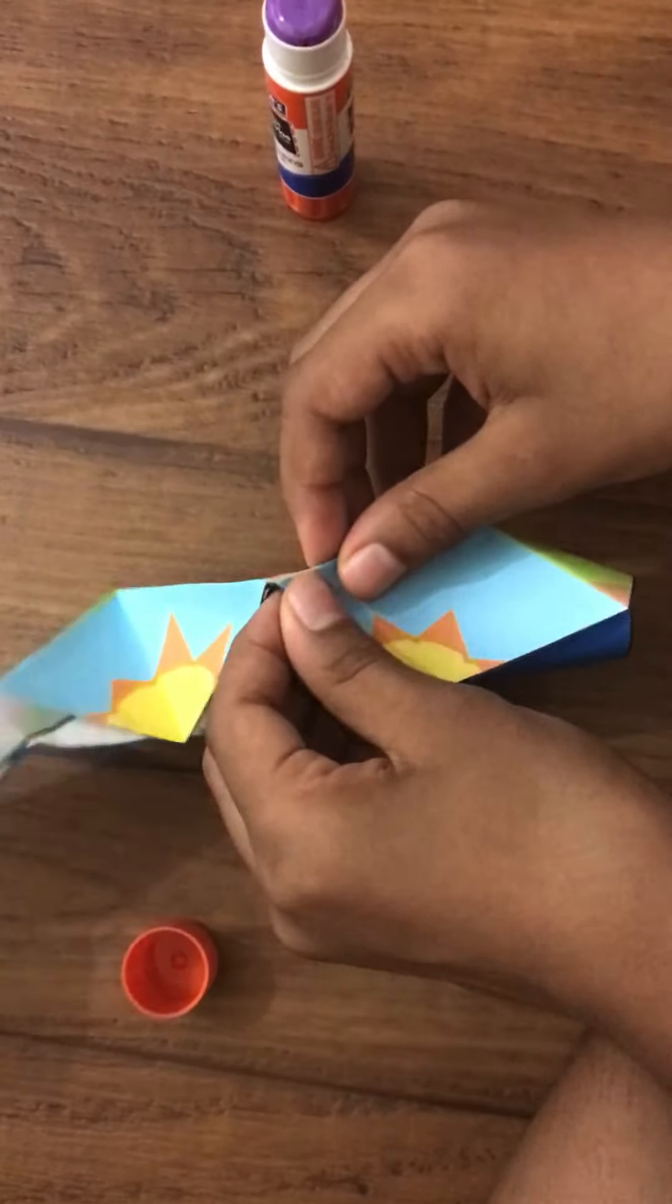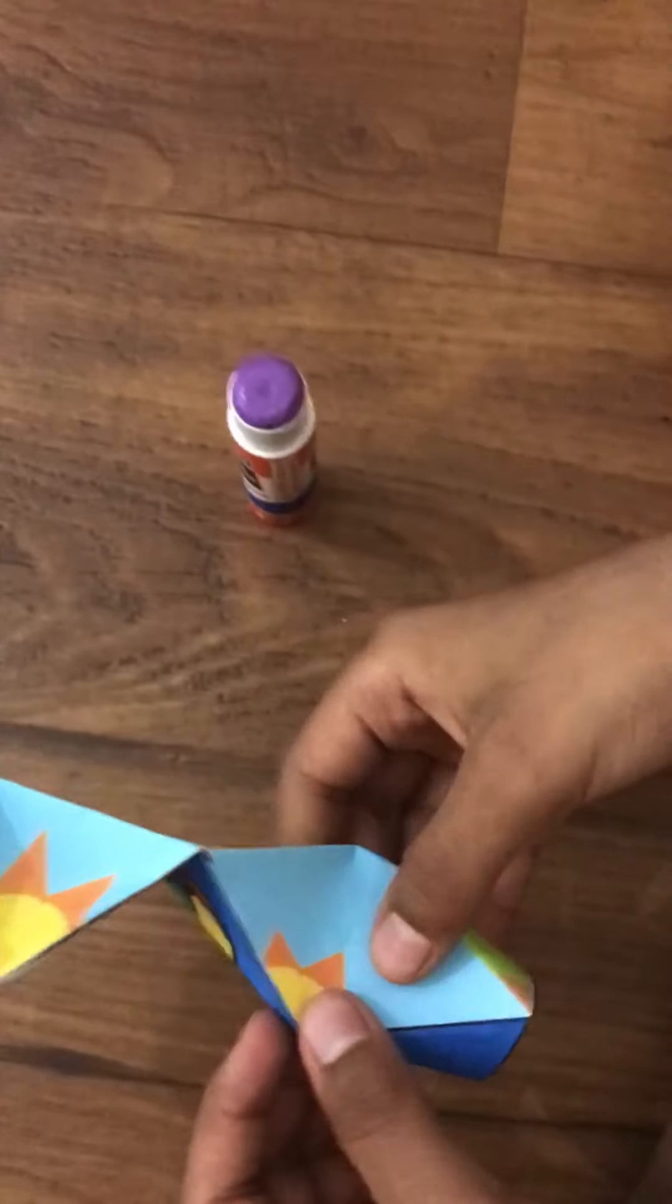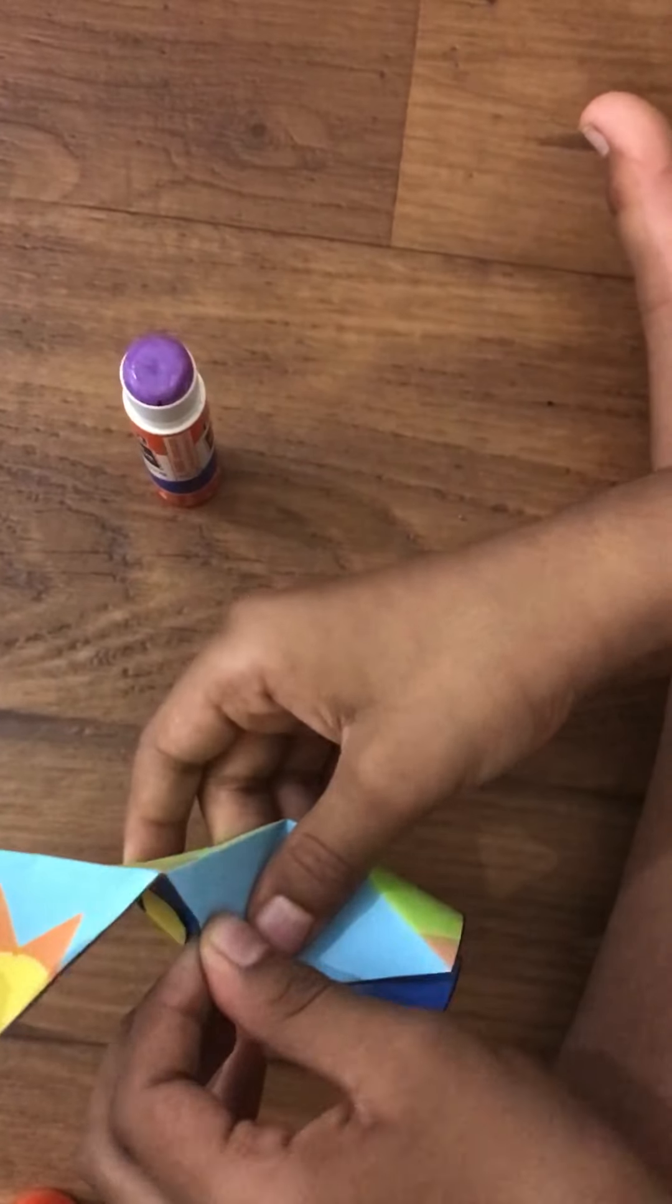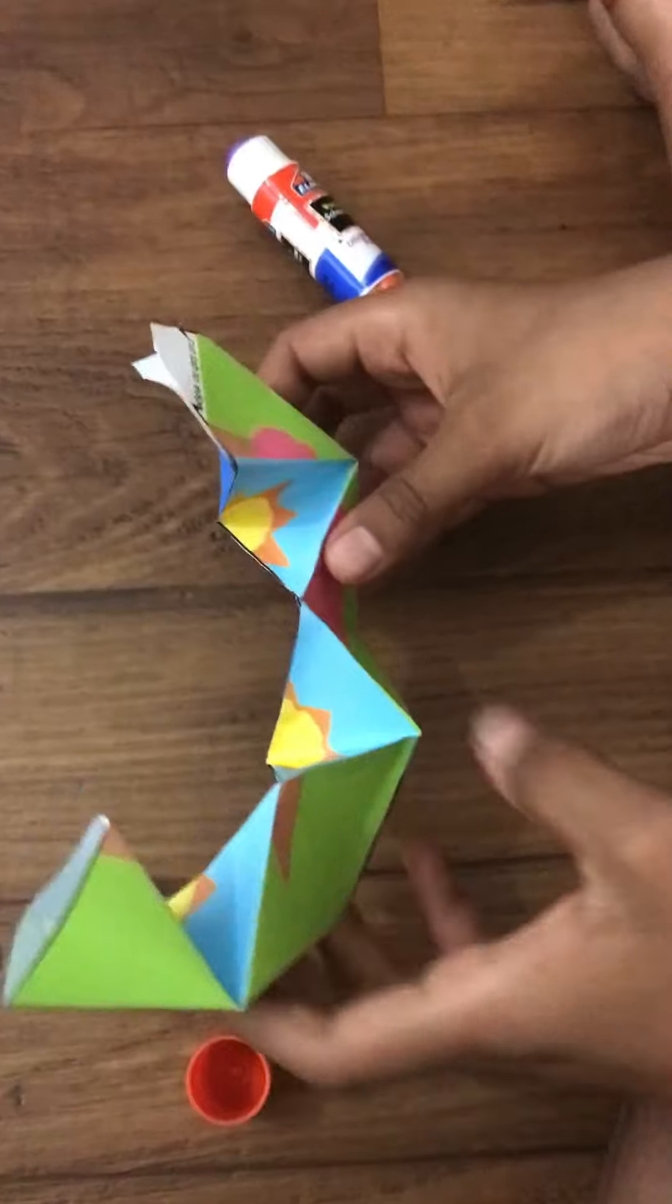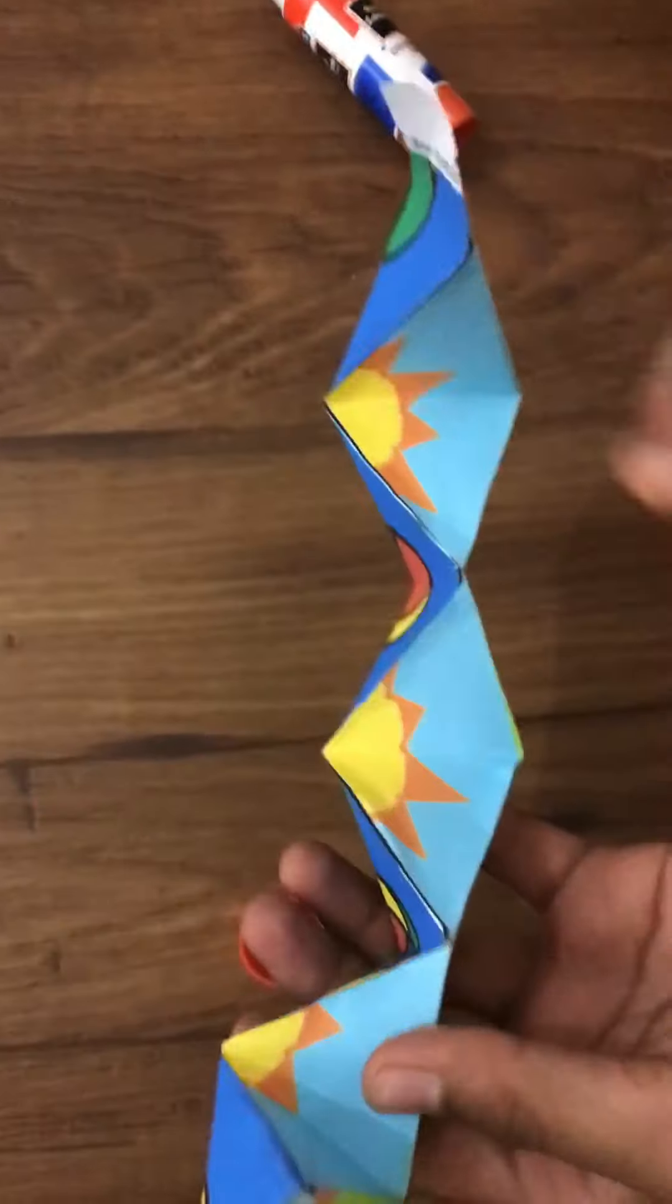Then I'm going to connect this. It's a little tricky, so if you need help, you can ask an adult. Okay, so when you do these steps, it's going to be like this.